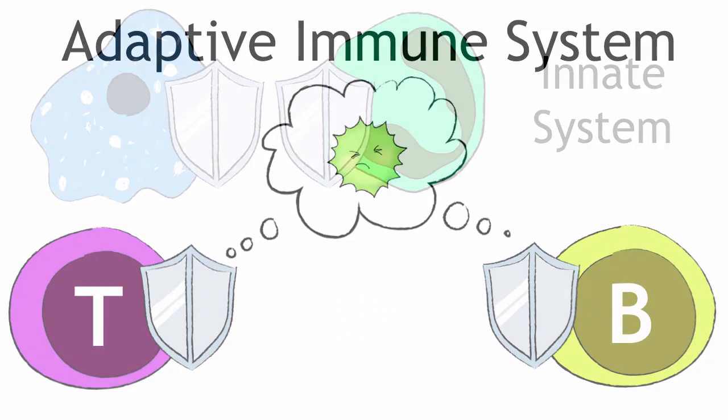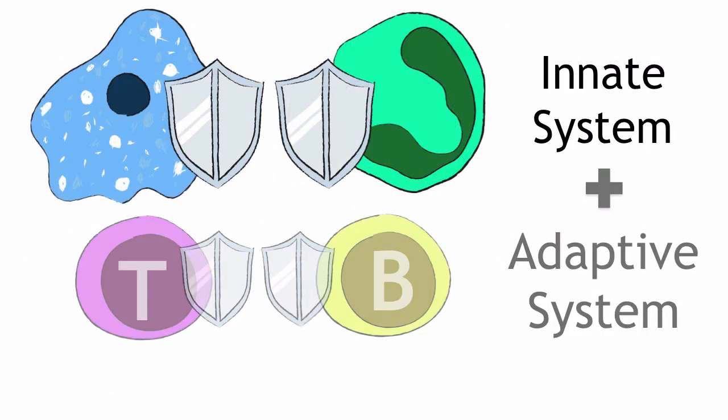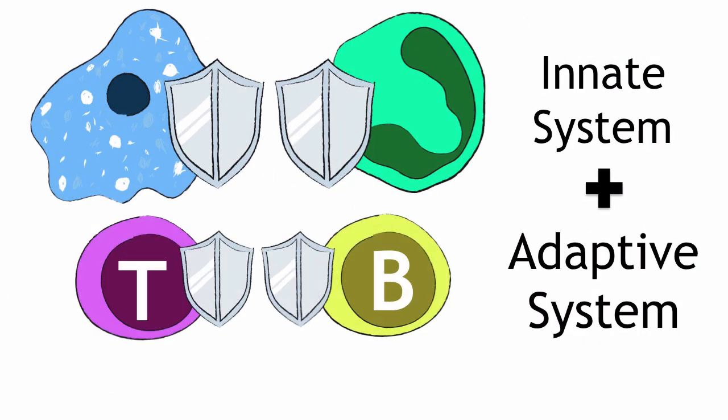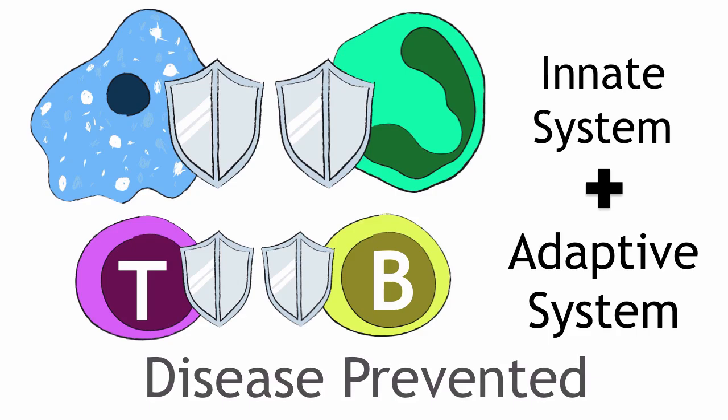Due to your innate immune system and your adaptive immune system working together, the bacteria can be cleared from the cut in your leg. Your immune system has successfully prevented the development of disease.